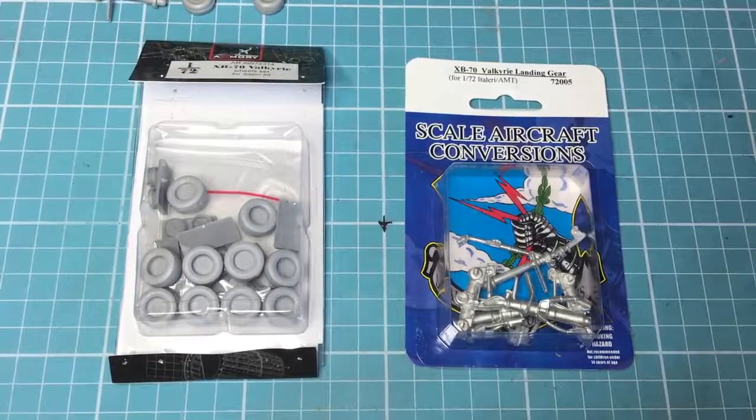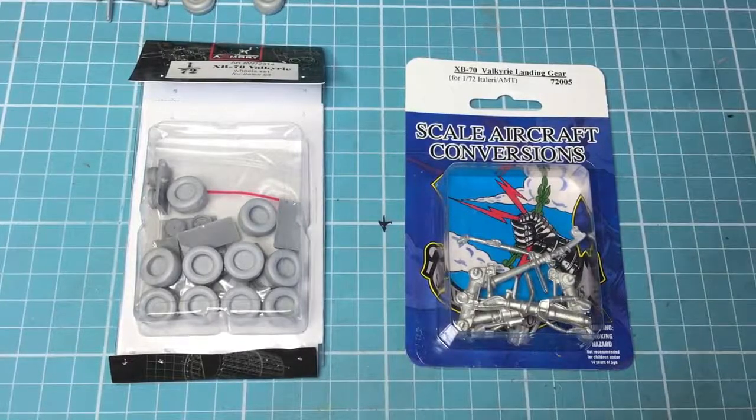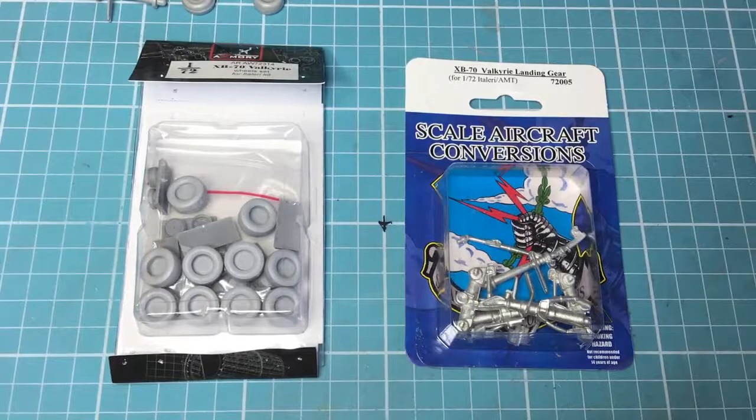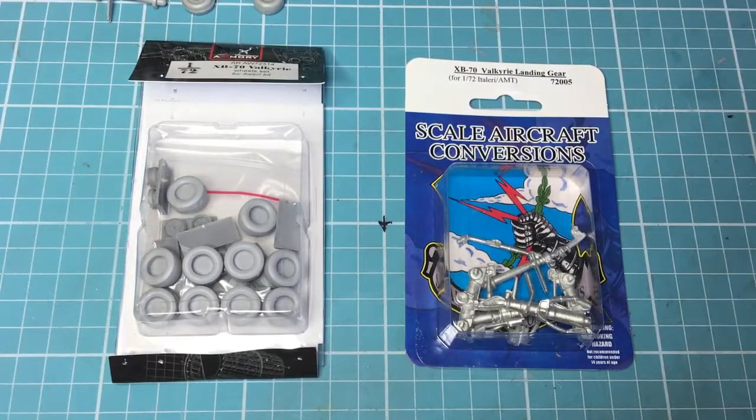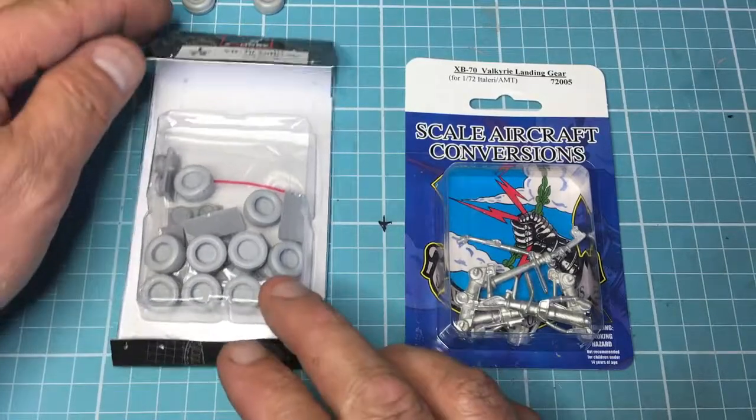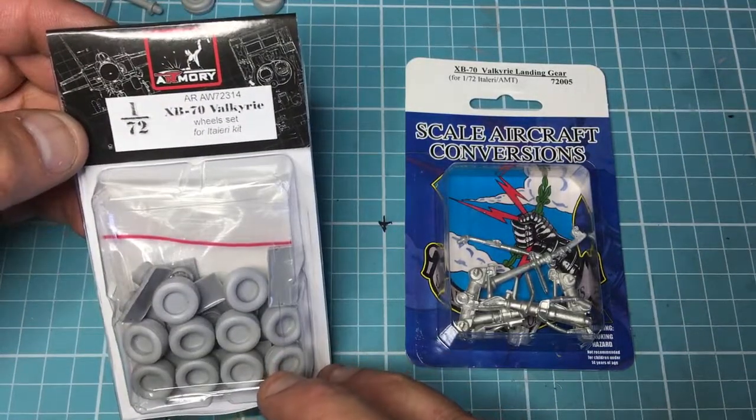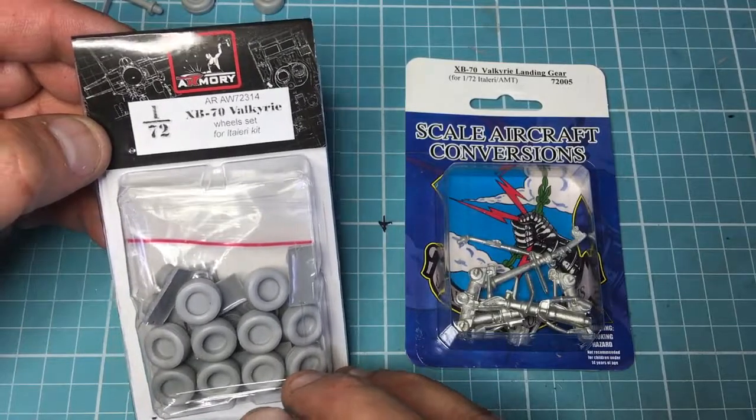Hey guys, Nigel here. Another unboxing video for you. These two arrived today - the new undercarriage legs from Scale Aircraft Conversions part number 72005, and the wheels and tires from Armory AR AW72314.